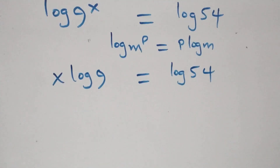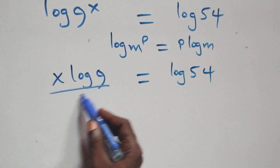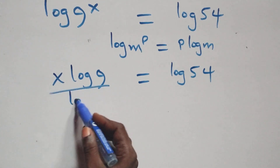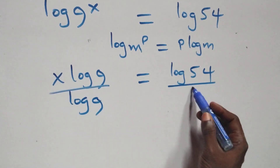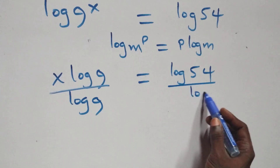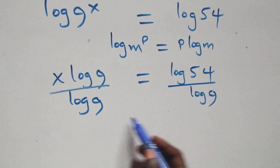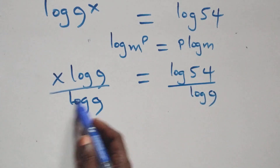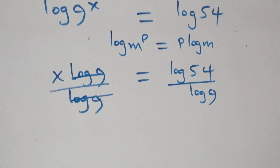Then here, we divide both sides by log 9 — divide this side by log 9, and also divide this side by log 9. Which implies here, log 9 cancels each other.